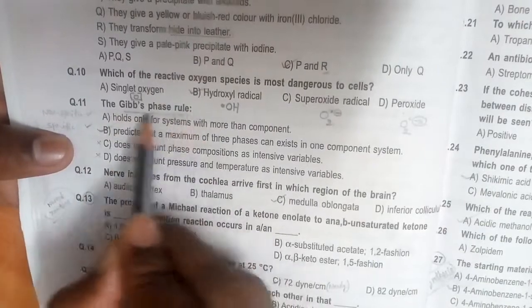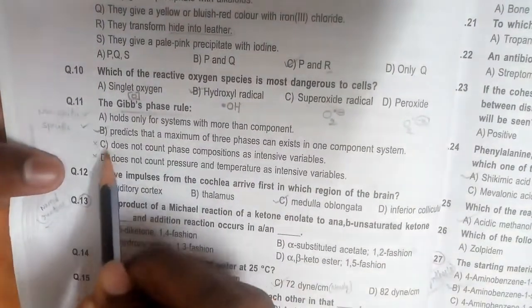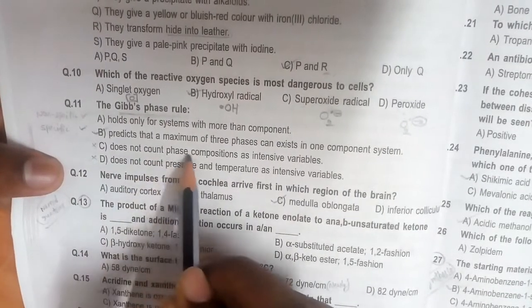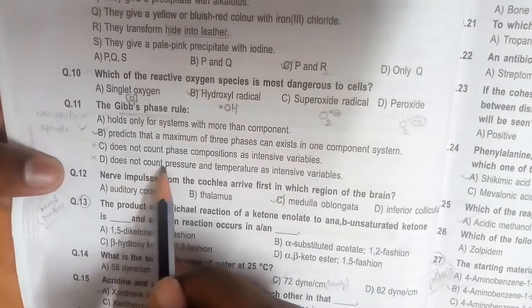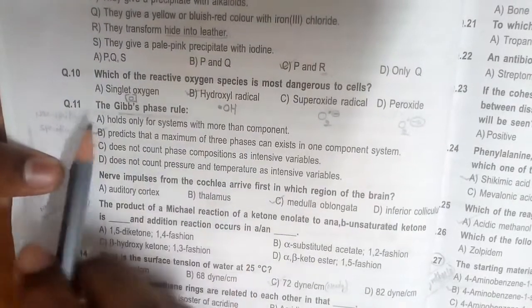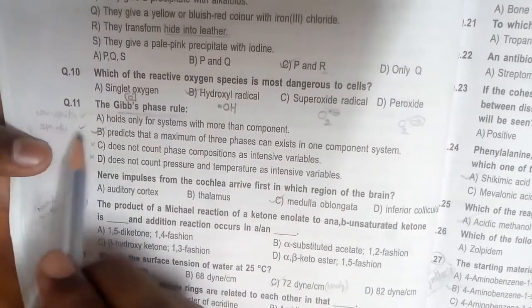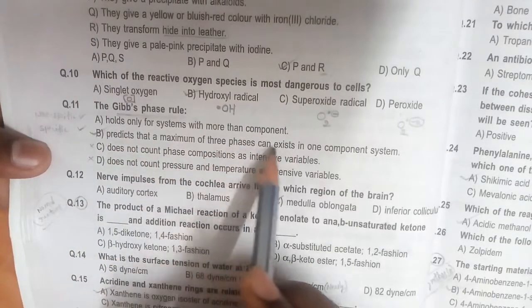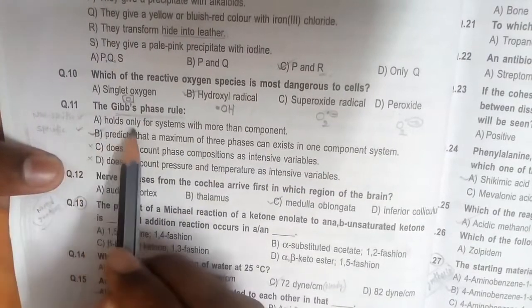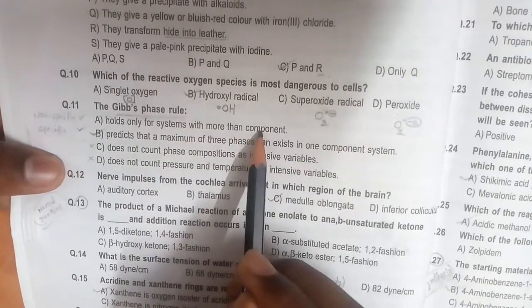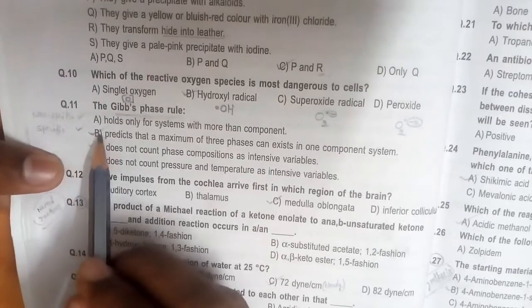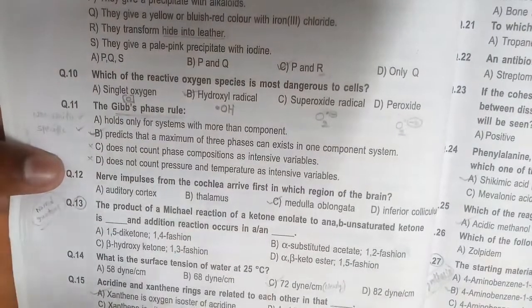Gibbs phase rule: They give two statements. Statement A says 'does not count phase composition as intensive variables' and B says 'does not count pressure and temperature as intensive variables.' Both A and B are correct, but B is specific—it predicts that a maximum of three phases can exist in one component system. A is also correct, holds only for systems with more than components, but is non-specific. If A and B are correct but B is very specific, that will be the correct answer.